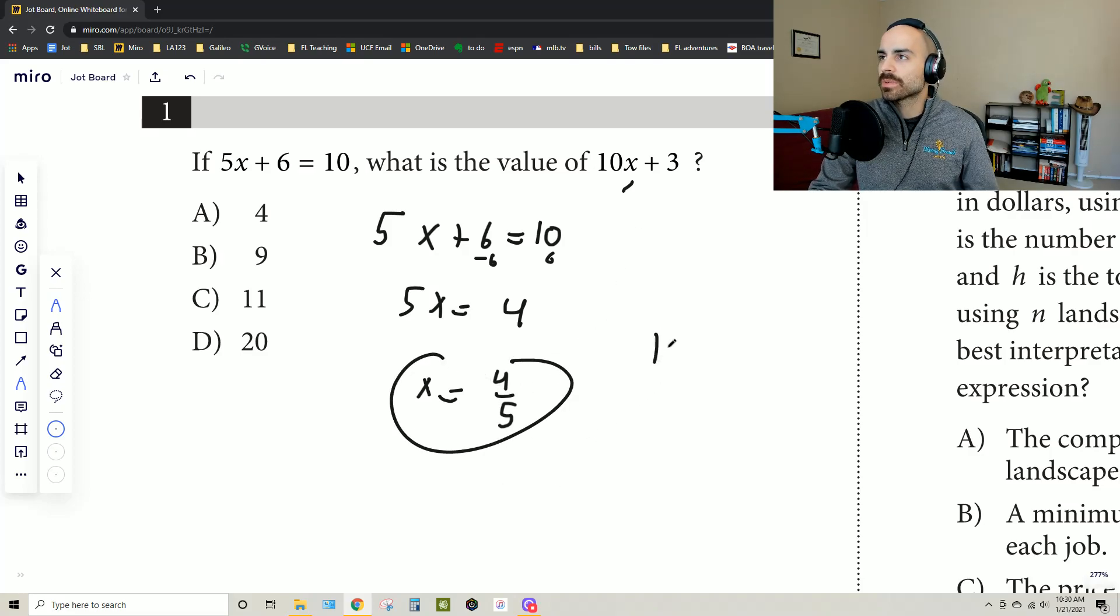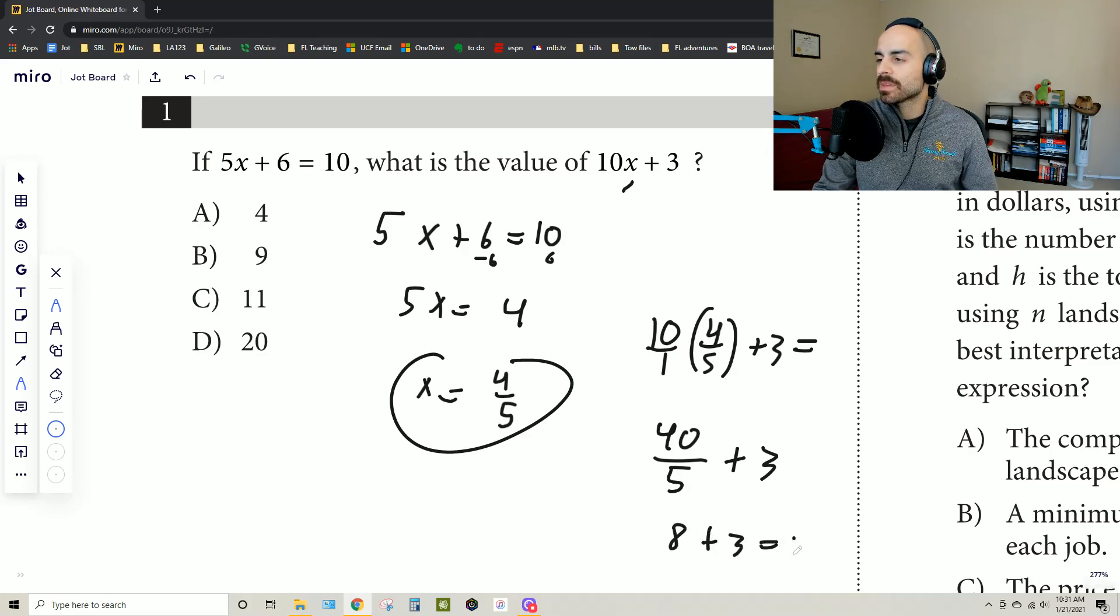As we rewrite that, we see that 10 times 4 over 5 plus 3, what would that equal? Well, then this just becomes a fraction, so it's now 10 over 1, so that way it's still 10. And you end up with 40 over 5 plus 3. Well, 40 divided by 5 is going to be 8. 8 plus 3 equals 11, and that gives us the answer C.